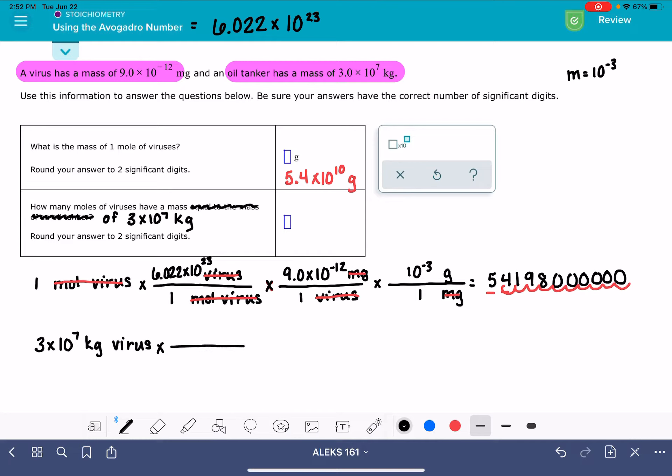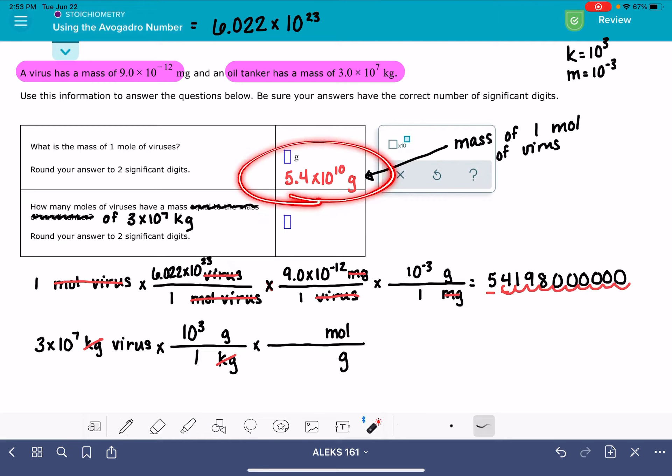Now, the first thing that I should do is keep in mind that up here is where I derived the relationship that is the mass of one mole of a virus, and it is in units of grams. So what I want to do down here is change my units from kilograms into grams so that I can use this relationship right here. Kilo is the prefix for 10 to the 3. So that means one kilogram is 10 to the 3 grams, and that's going to cancel out those kilogram units. The next thing that I want to do is get out of units of grams and get into units of moles. And to do that, I'm going to be using this relationship right here.